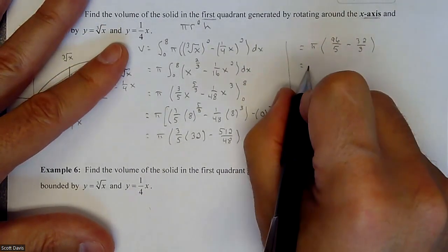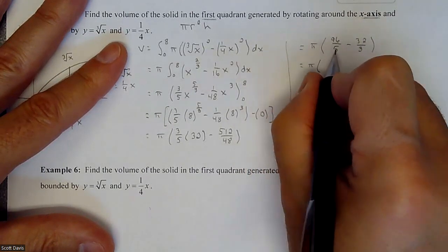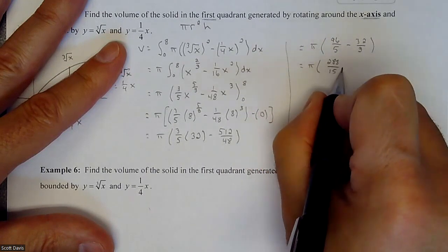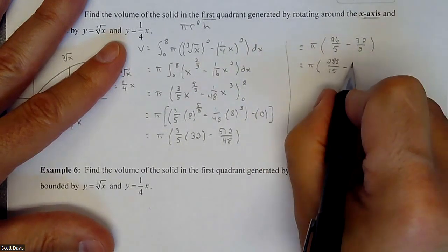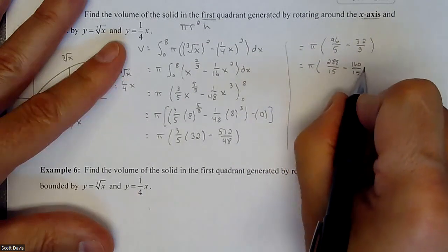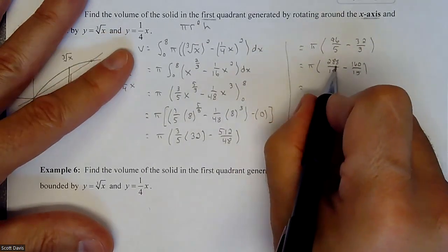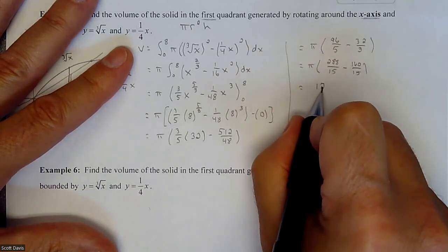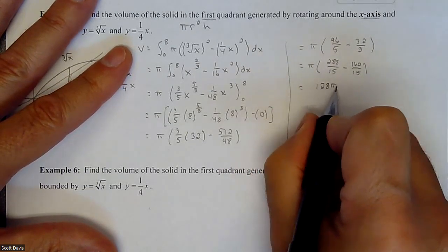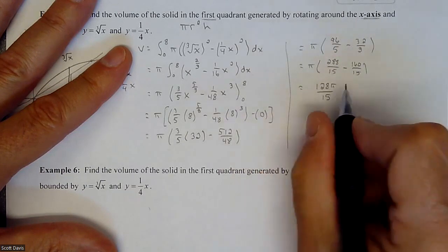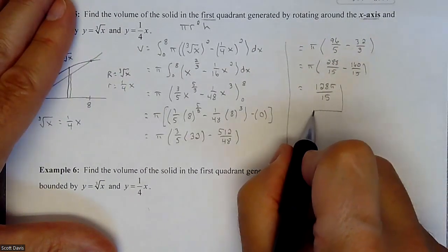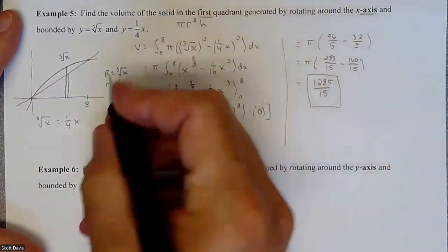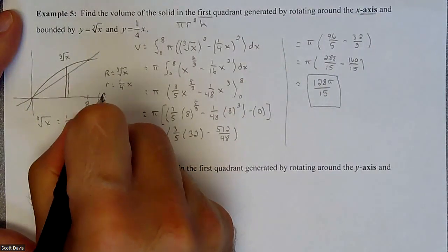Then I need a common denominator out of that. I'm going to multiply this by three which is going to get us a 288 over 15. Multiply this by five is going to be 160 over 15. If I subtract my 288 minus my 160 and then take the π on, we'll get 128π over 15, and that does not simplify. So that is our volume of this shape being rotated around the x-axis.